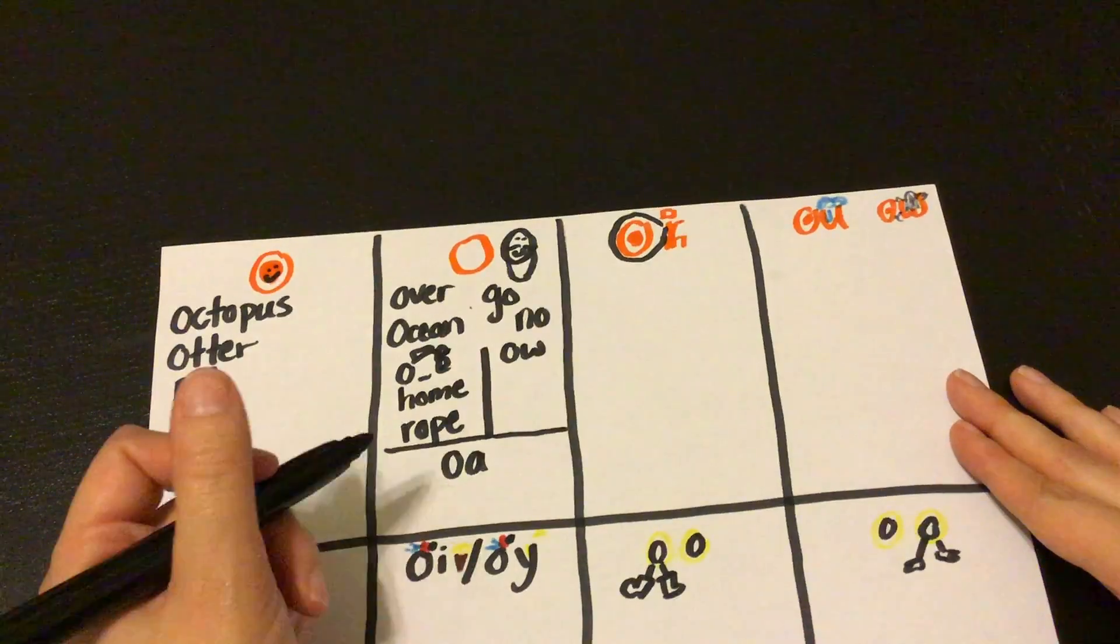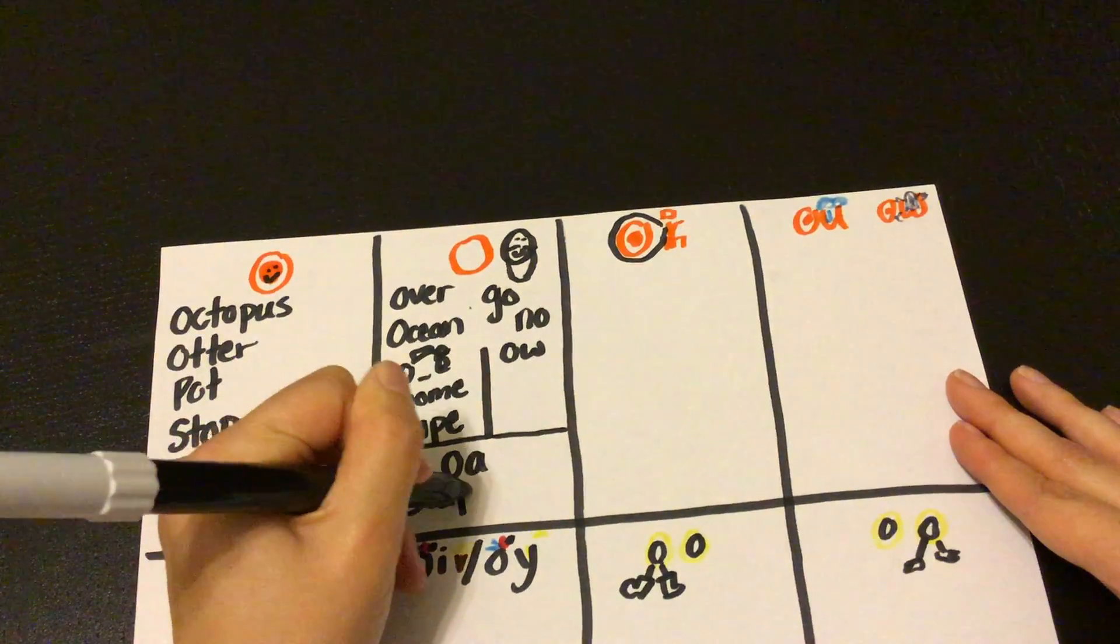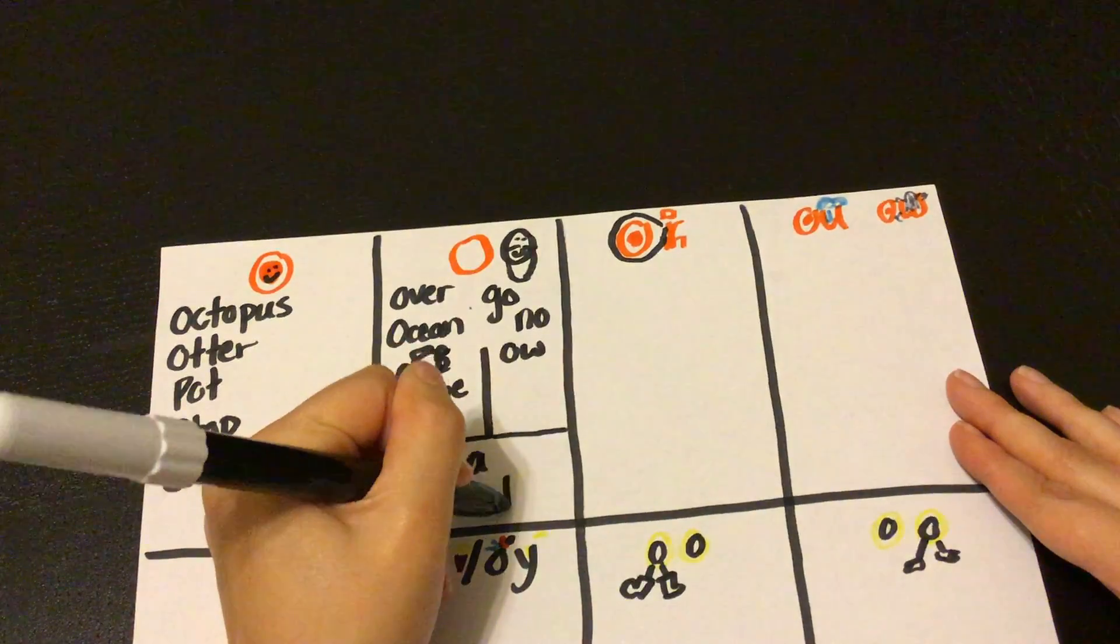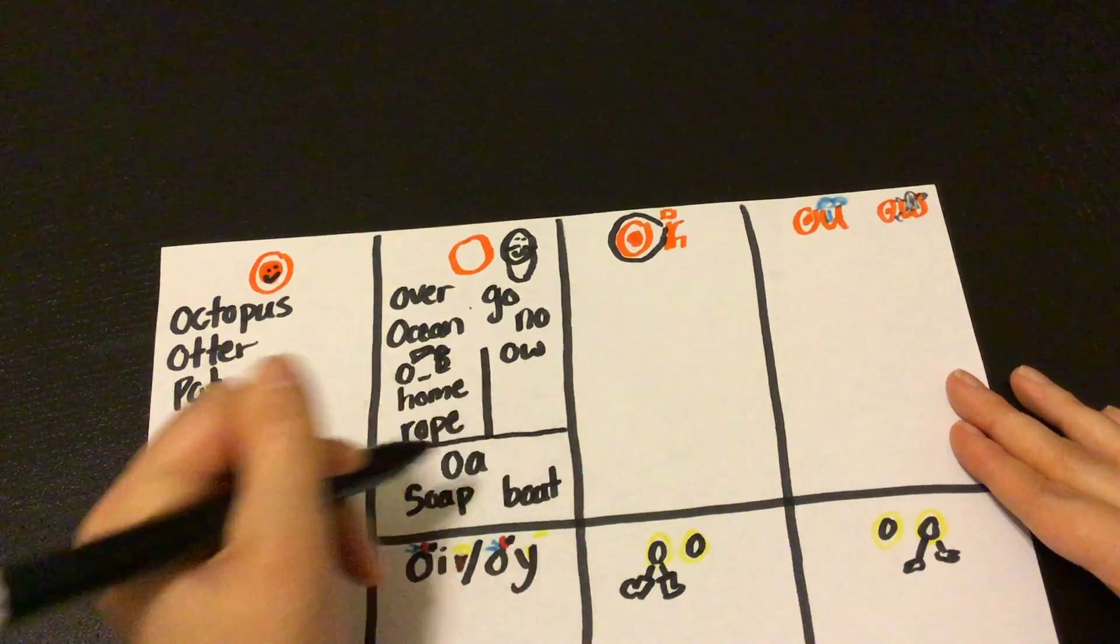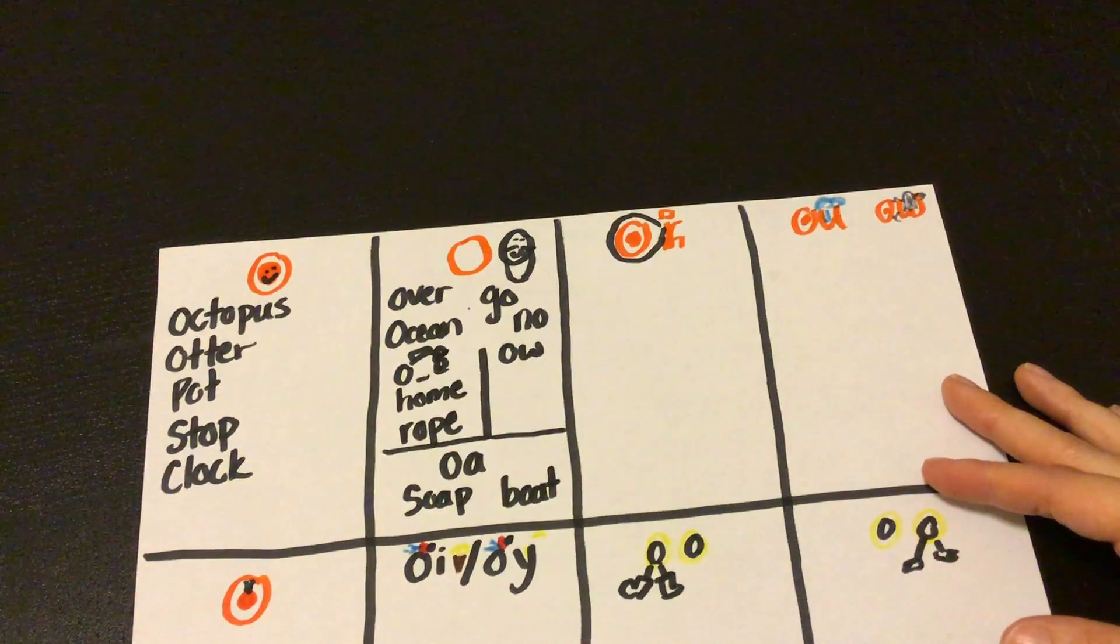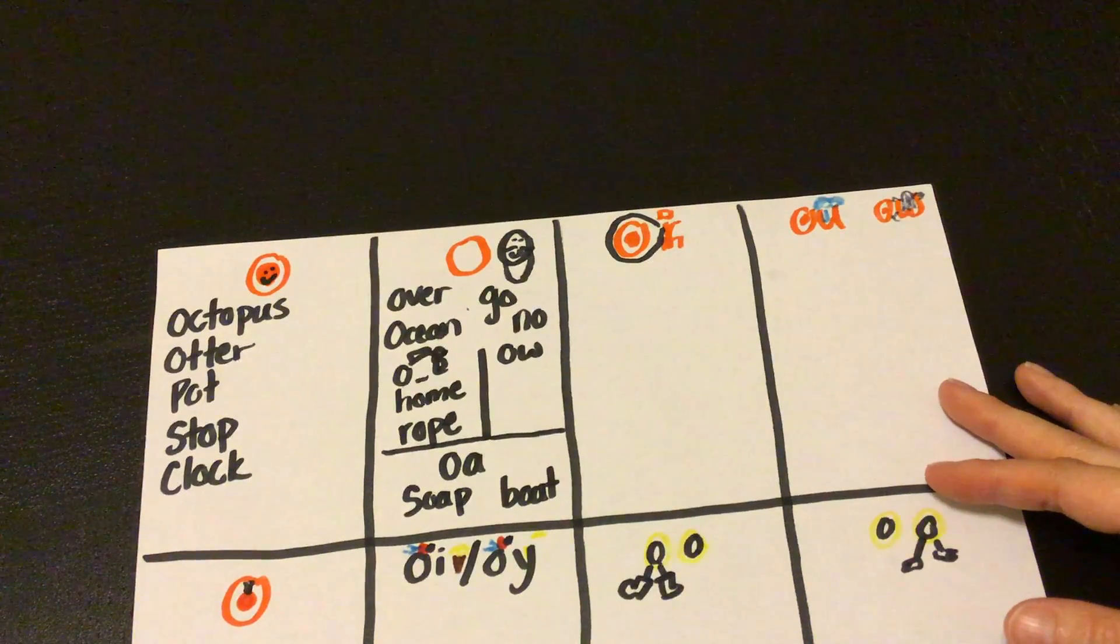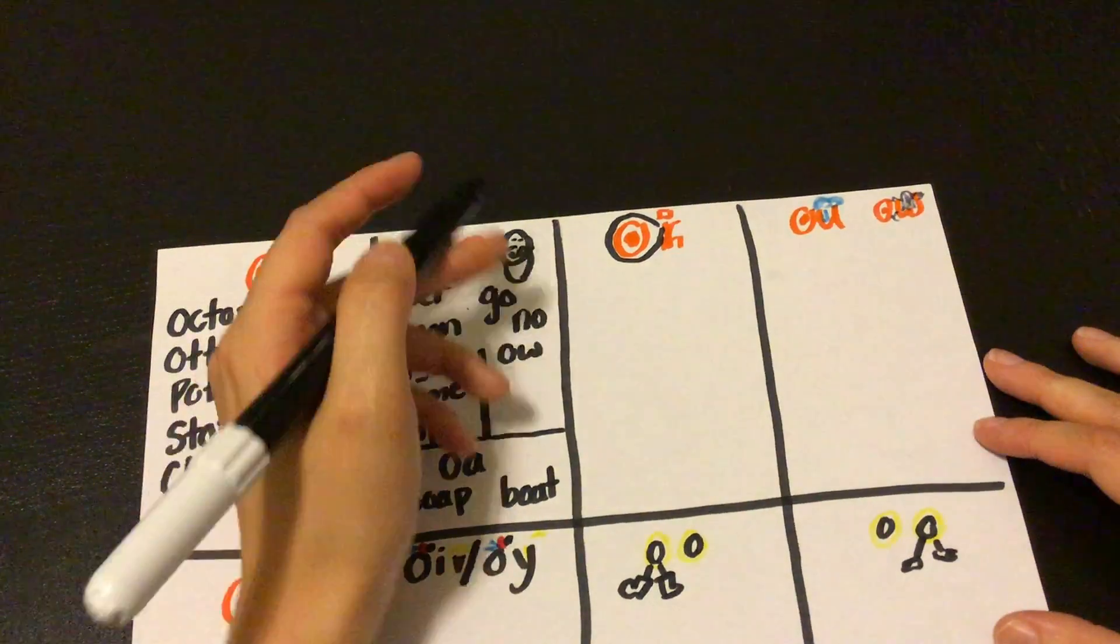Right? And then for O-A words, two vowels out walking, we have words like soap and boat and goal and oat and toast and coach and moat.